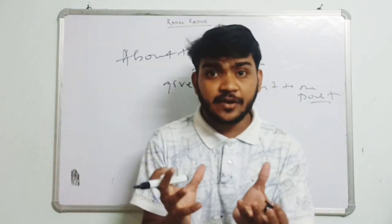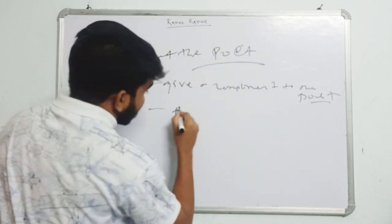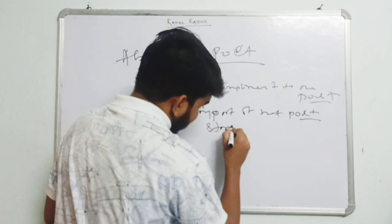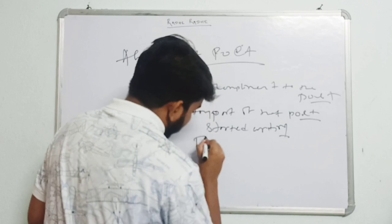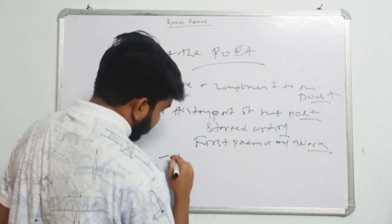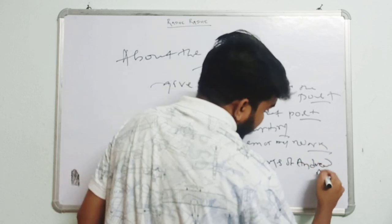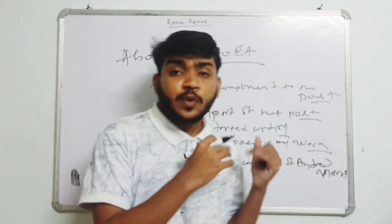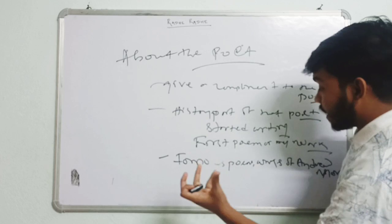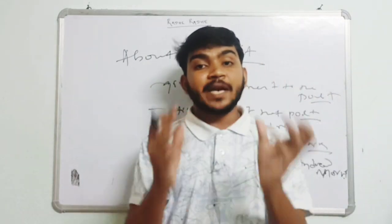Praise the poet in a manner such as: 'Andrew Marvell was the greatest poet of the Puritan age.' Then write the history part of that poet — when he started writing, his first poem or any work. Then write about his famous poems and works. So in this section you give a brief description of the poet: a compliment, the history, the first work, and the famous works.